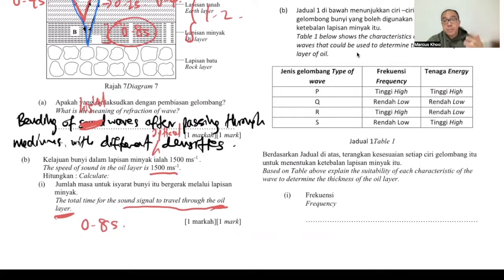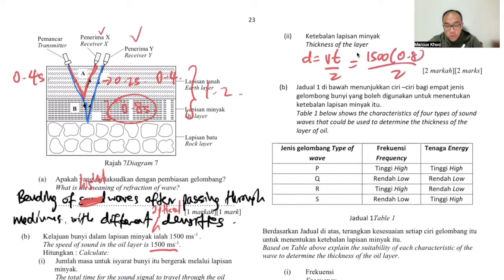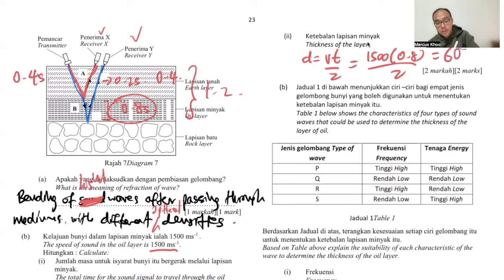Just minus only. Then for the thickness of the layer, you use the formula D equals Vt over 2. With V = 1500, time = 0.8, divided by 2, you should get 600 meters altogether.